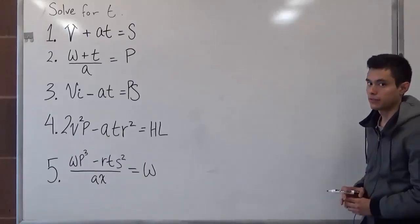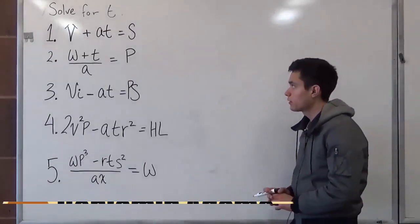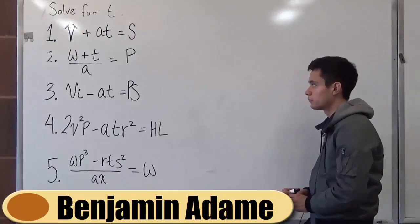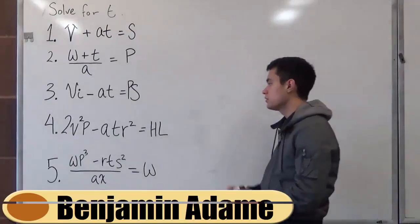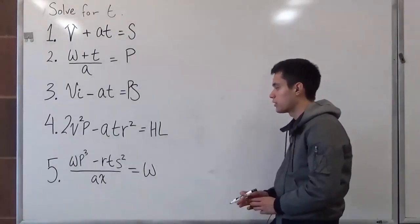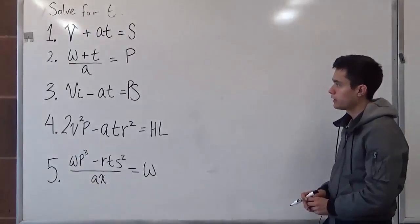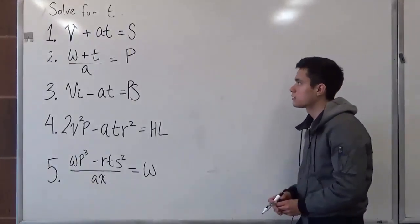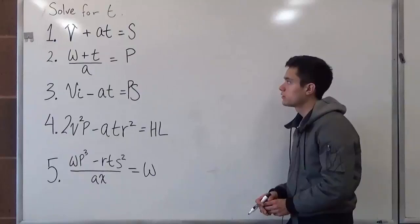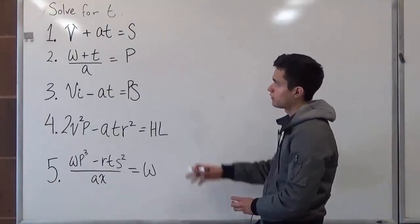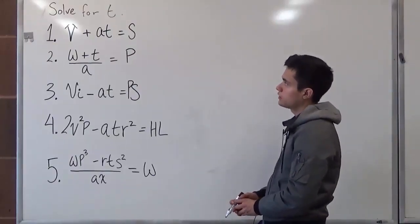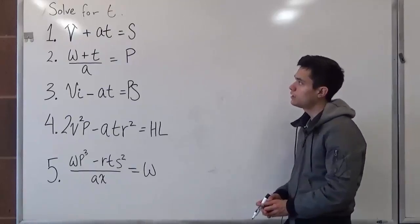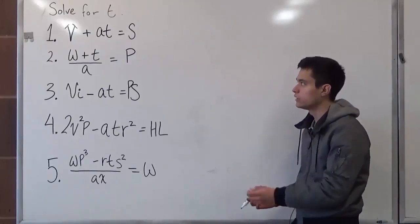Hi, welcome to helpyourmath.com. Today we're going to be solving these five problems, ranging from easy to particularly challenging. But by the end of this, you should be able to know how to do this. So the problem is we want to solve for t for all of them. So what this means is that we want t on one side, and only t.